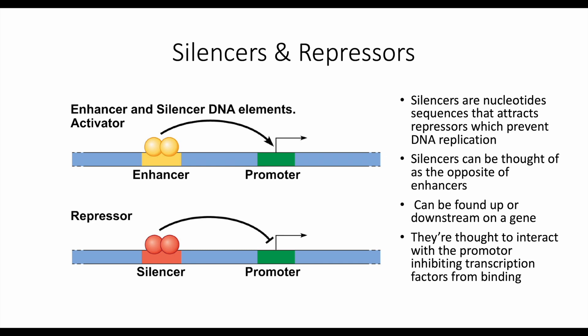So silencers and repressors. A silencer is a sequence of nucleotides that attracts specific repressors which prevent transcription. Silencers can be thought of as the opposite of enhancers — they can be found upstream or downstream on a gene and are thought to interact with the promoter by inhibiting transcription factors from binding. Simply put, a silencer attracts specific repressor proteins, while an enhancer attracts specific activator transcription factors. One promotes transcription, one represses transcription.